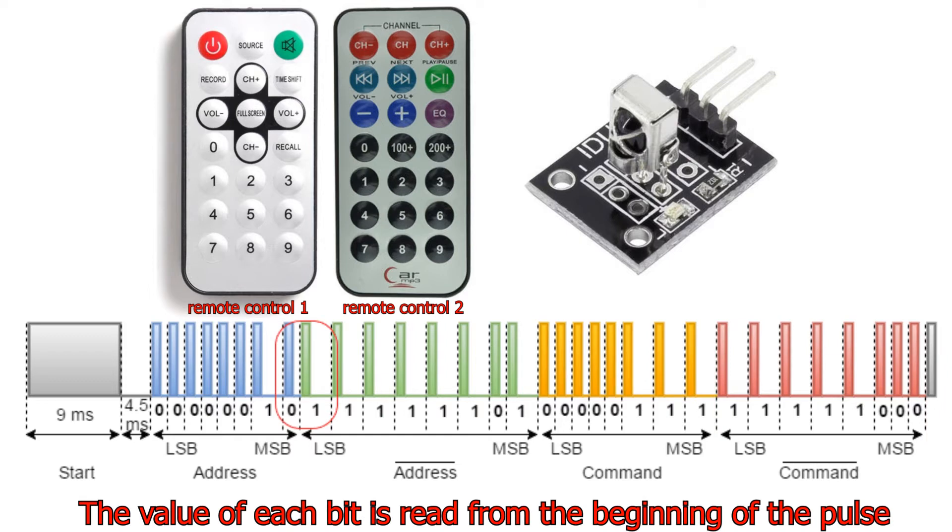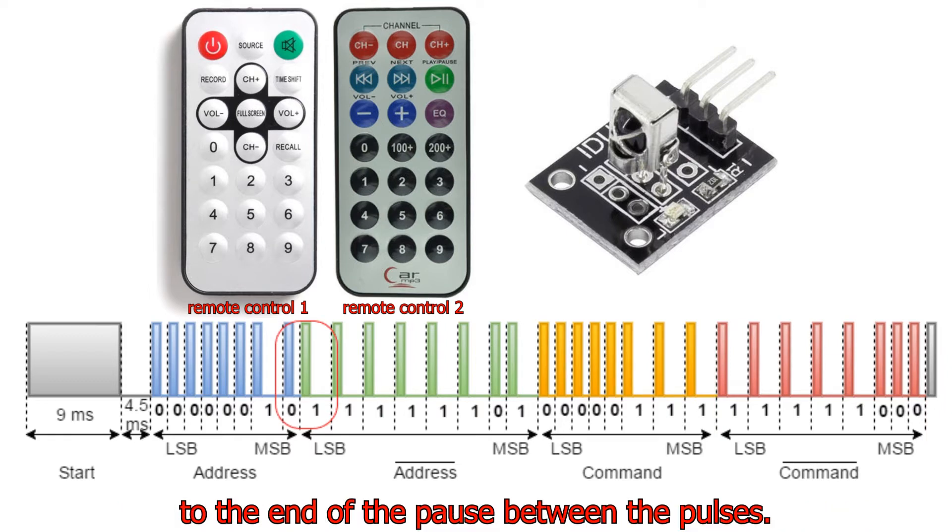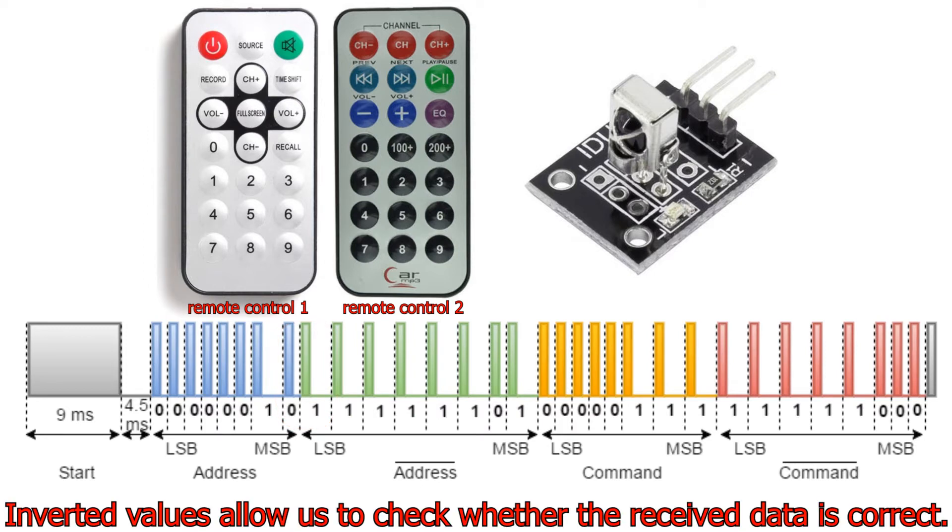The value of each bit is read from the beginning of the pulse to the end of the pause between the pulses. Inverted values allow us to check whether the received data is correct.